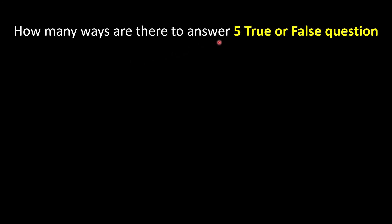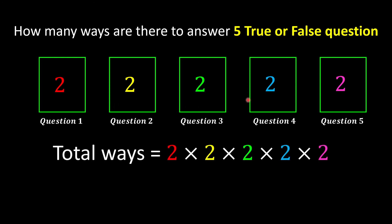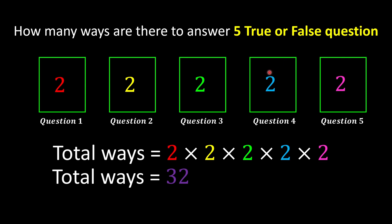Let's look at an example: how many ways are there to answer five true or false questions? We prepare five slots for questions one through five. Since each question is true or false, we have two ways to answer each question. Since all events must happen in sequence, we use the multiplication rule and multiply all the ways together: 2 × 2 × 2 × 2 × 2 = 32 ways to answer five true or false questions.